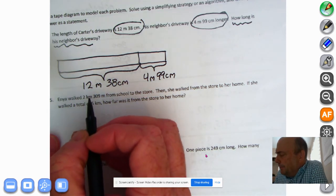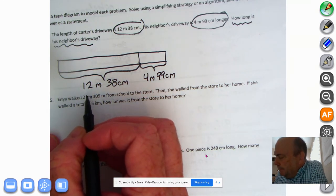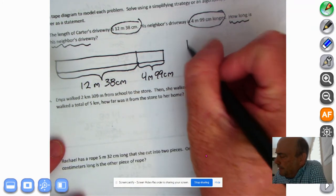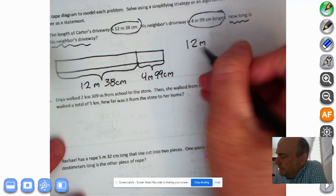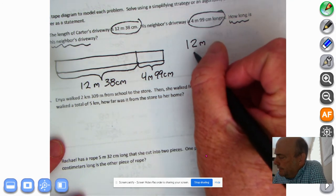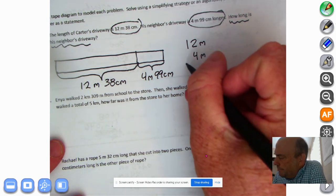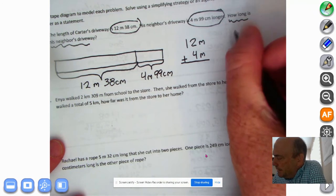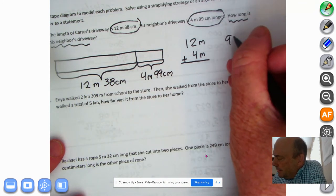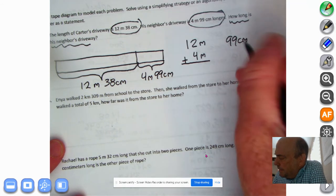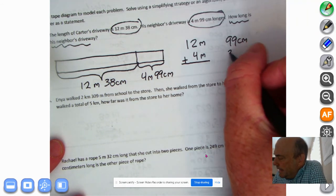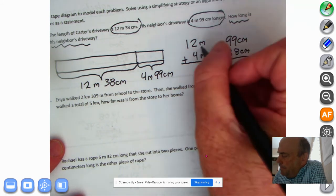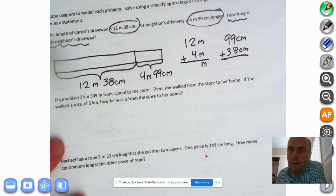So use a simplifying strategy. Now, let's do this one right here. See, 12 meters plus 4 meters. And we'll do 38 centimeters plus 99 centimeters. I'm going to put the larger number on top because it's a strategy. The M drops down. You with me?